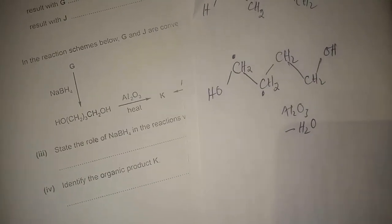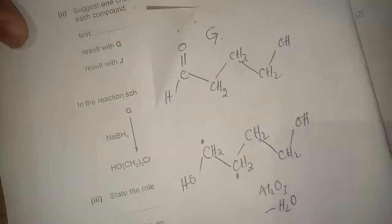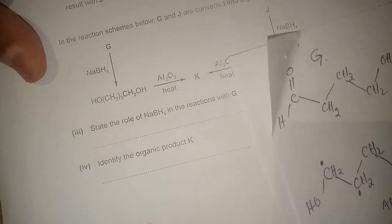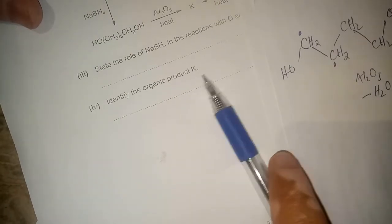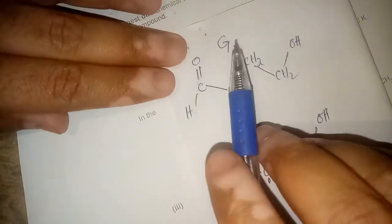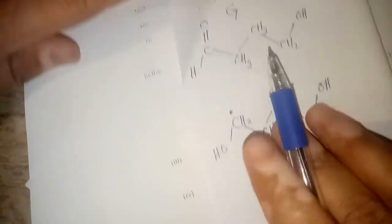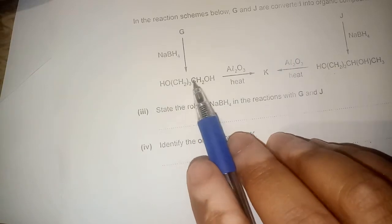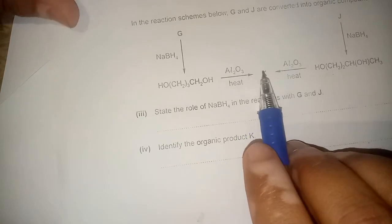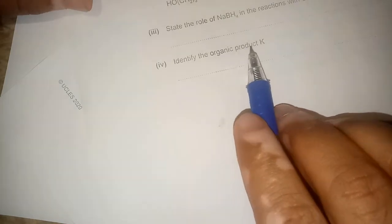Continuing the leftover part of question number four, part B — identify the organic product K. This is a continuation of the paper October/November 2020, series 9701/22. The video was interrupted so I'm covering the leftover part here. G is drawn as we discussed, G is converted into the primary alcohol, and then in the presence of a dehydrating agent it is converted into K.